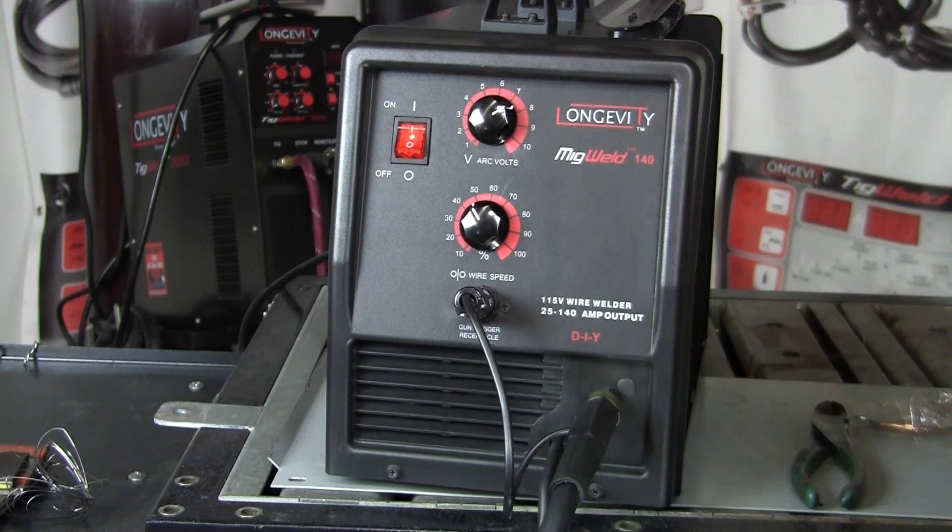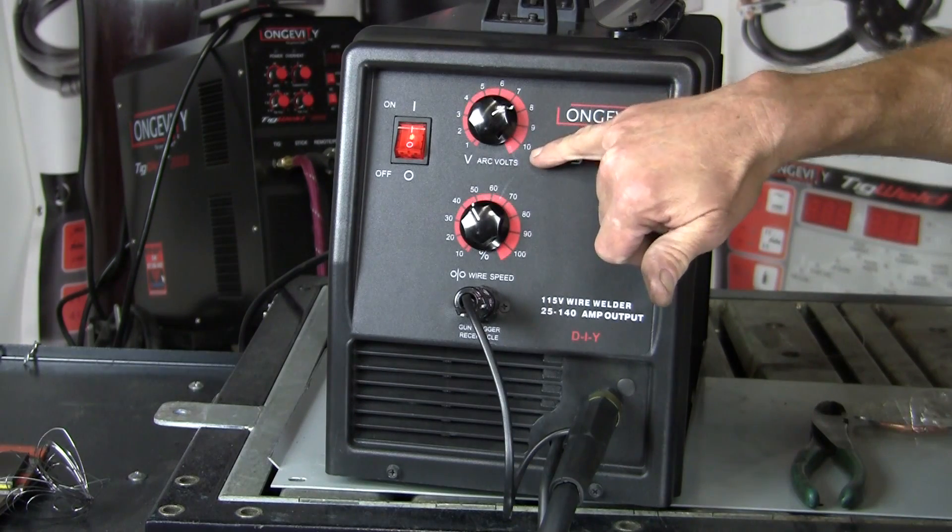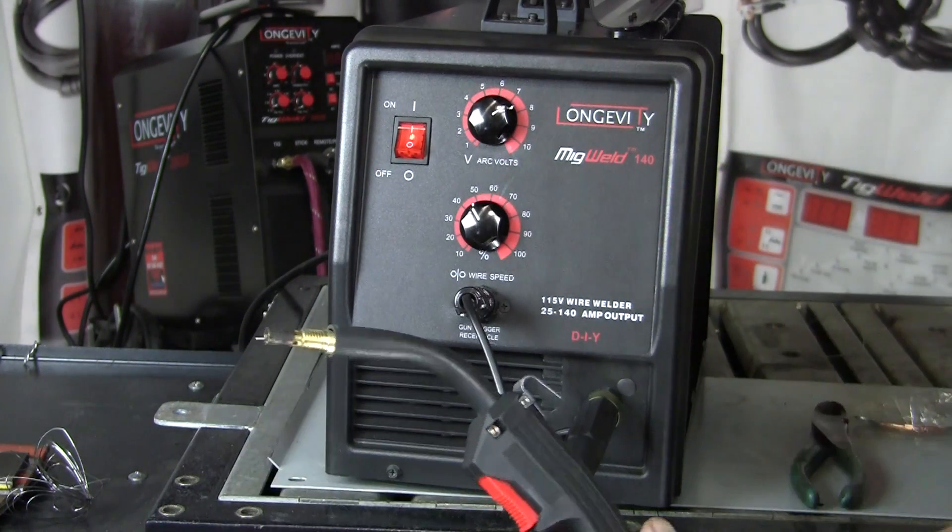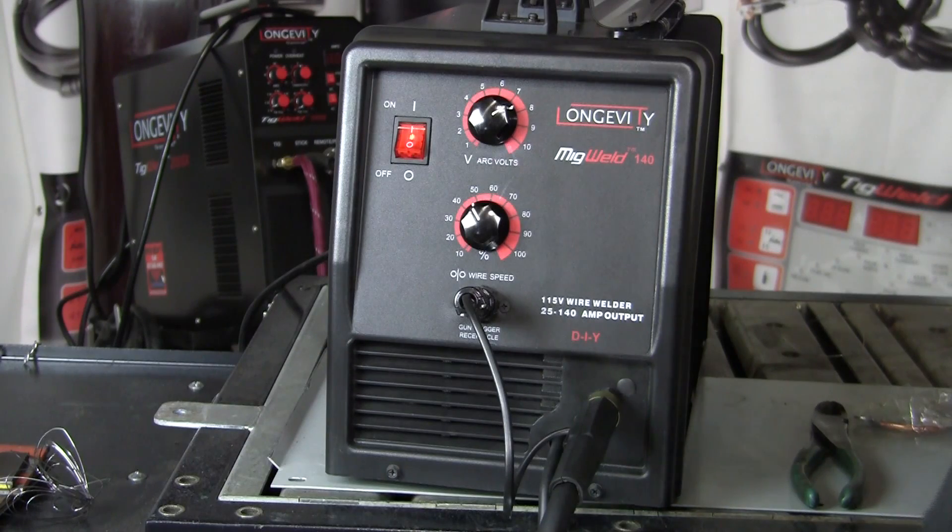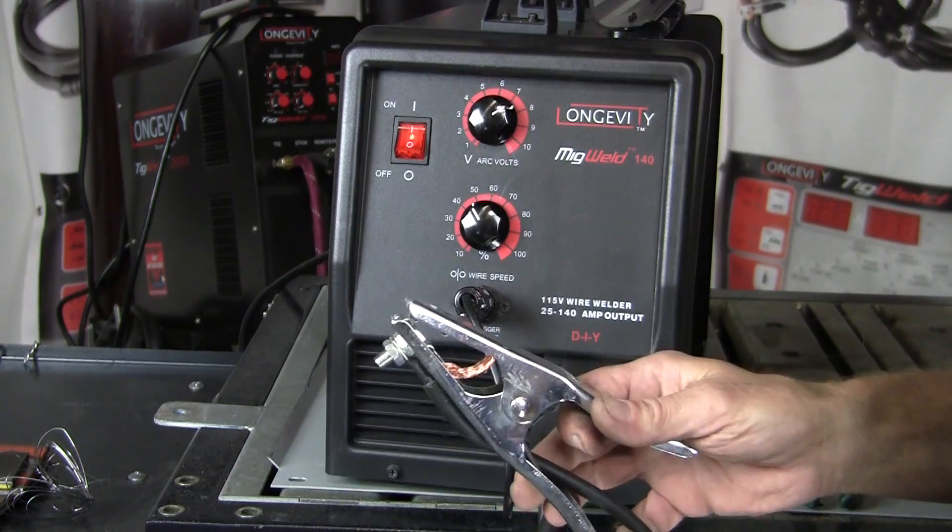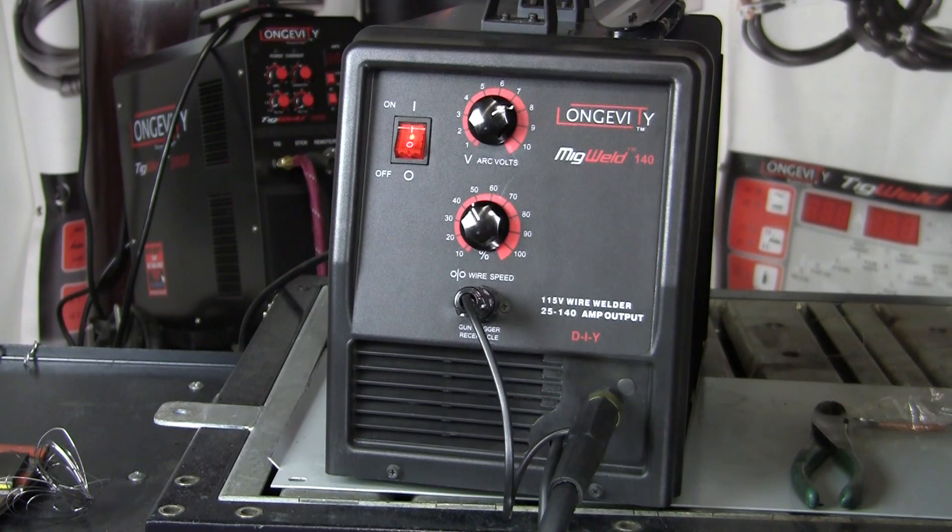This is the Longevity MIG Weld 140. It runs on 110 current and will run with flux core wire or solid wire. The flux core, you don't need the gas, but with solid wire you need the CO2 argon mixture. Very simple - you have your arc volts, your wire speed, your MIG gun and your ground, and then your power. Those are the only three cables you have to worry about.